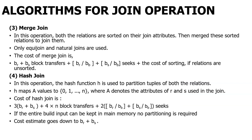For merge join, when you want to do the merge operation you use either an equi-join or natural join. The formula is: BR + BS block transfers, and BR/BB + BS/BB seeks. These are the cost calculations for merge sort join.